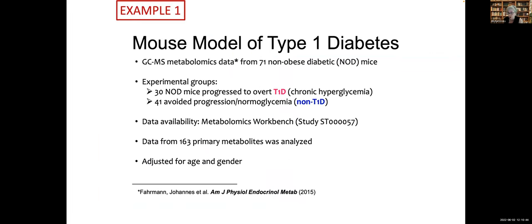If you're going to test the tool, first you'd better be able to recapitulate some of the known findings and show that you can find what other people have found before. This particular dataset we downloaded from Metabolomics Workbench, but the data was at UC Davis. This is a mouse model of type one diabetes. As you can see, we had a relatively small number of samples here, focused on a subset of data involving 163 primary metabolites, adjusted for gender and age.